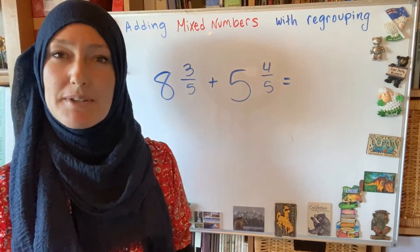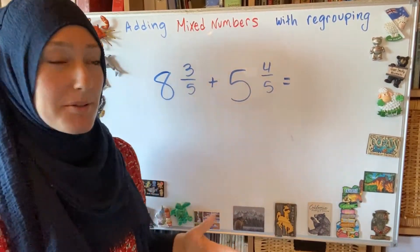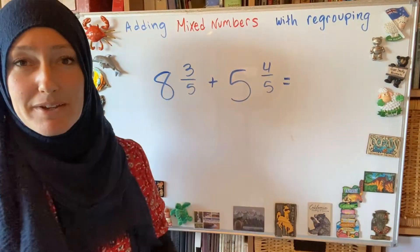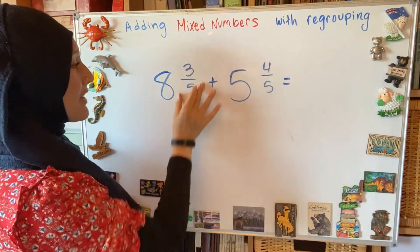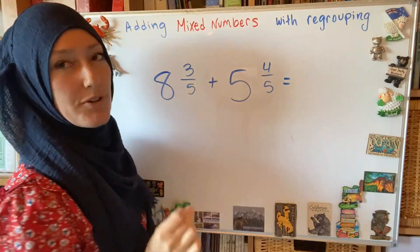When we are adding mixed numbers, sometimes we need to regroup at the end of the problem. So, again, I want to look at my fraction part first. So I have 3 fifths and 4 fifths.